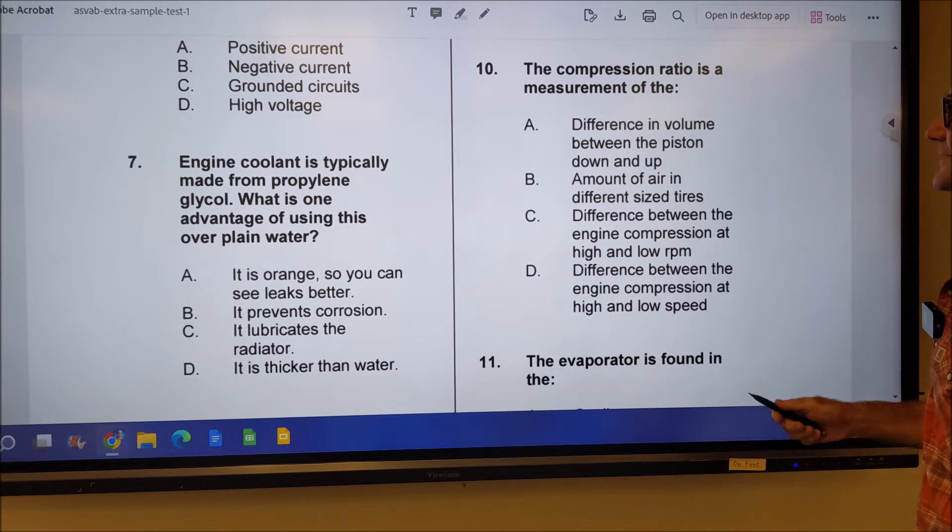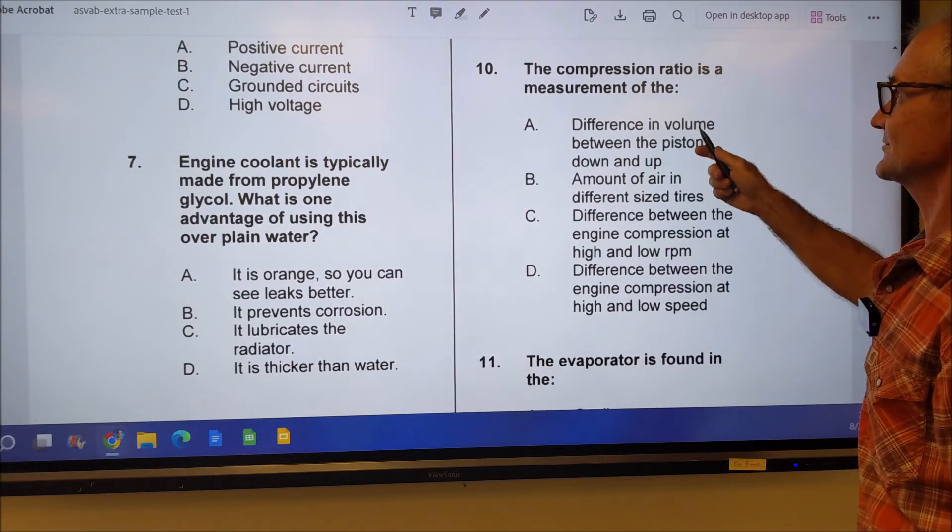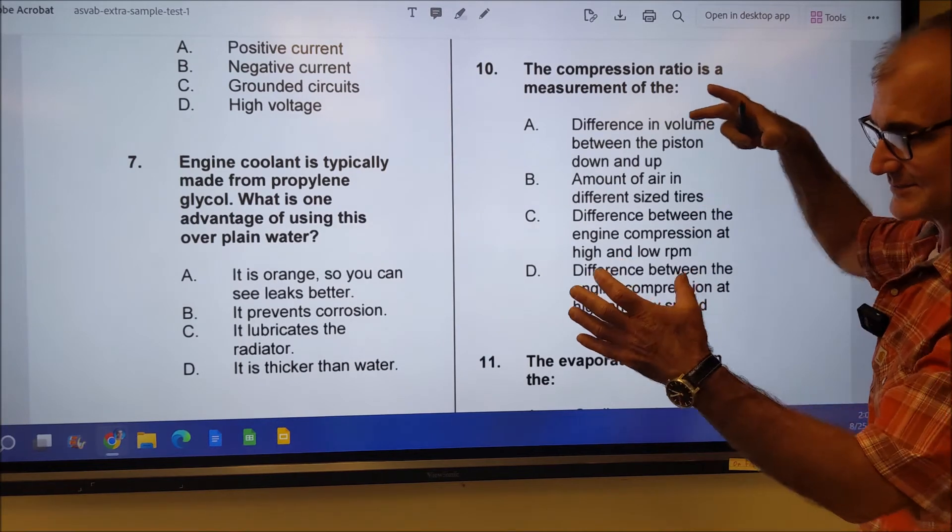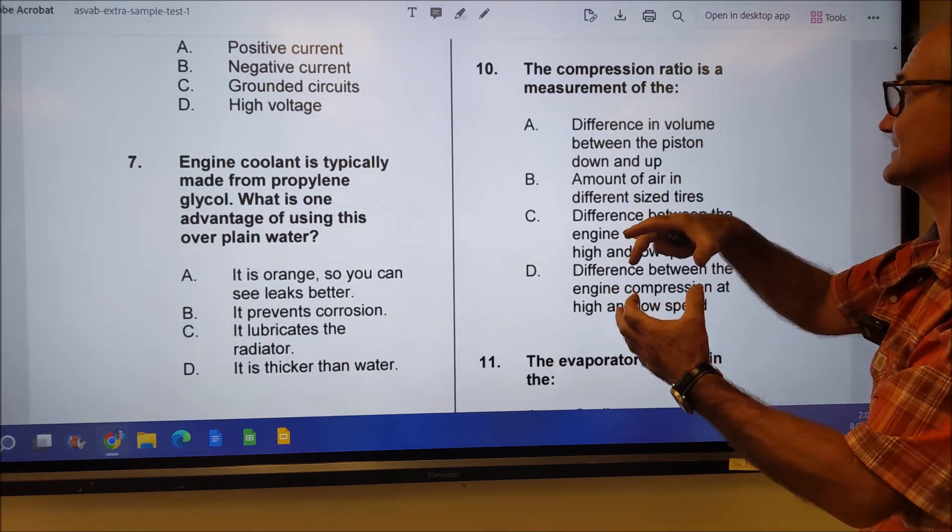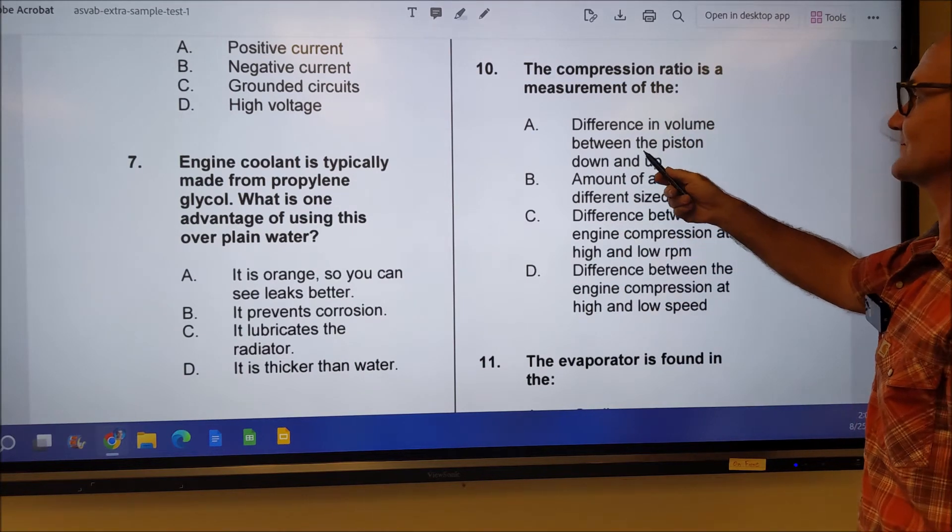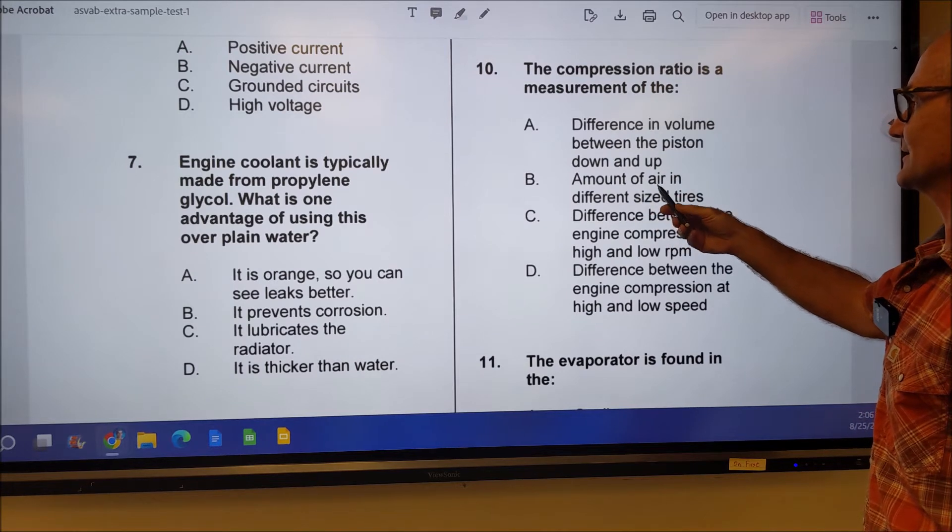If you're not a mechanic and you don't quite know what these things mean, you can still figure some of these out. A compression ratio is a measurement. It's compressing something, right? So where is it going to get compressed? It'll be in the engine and it's a ratio. So the difference in volume between the piston up and down, that makes a lot of sense.